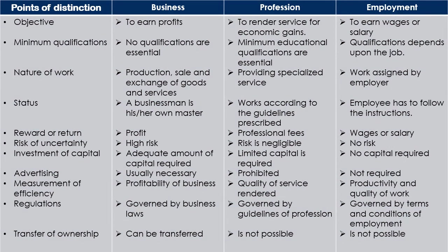Now let us look into the distinction between business, profession, and employment. Even though all three come under economic activity, they differ on several points. The objective of business is to earn profit; the objective of profession is to give service for economic gain; and employment is to earn wages and salaries. There is no need for any qualification for business — anyone can set it up. Profession requires minimum educational qualifications. Employment depends on the type of job. The nature of work: business involves production, sale, and exchange of goods and services; profession provides specialized service; employment is the work assigned by the employer.